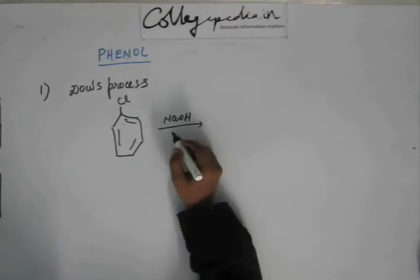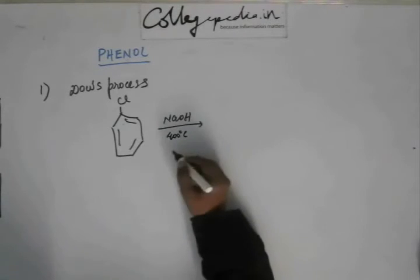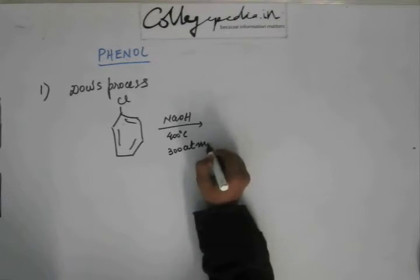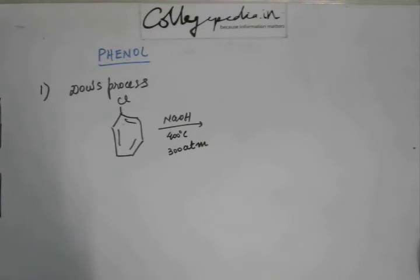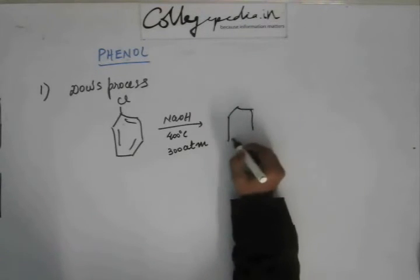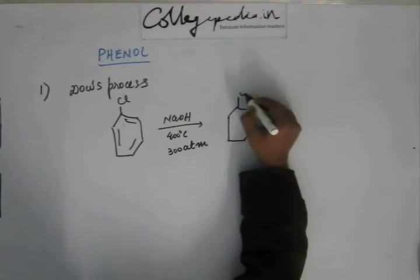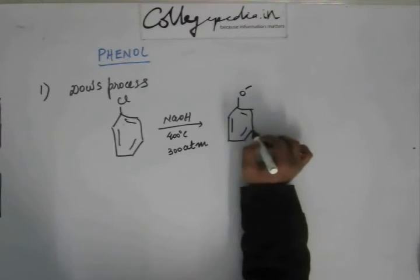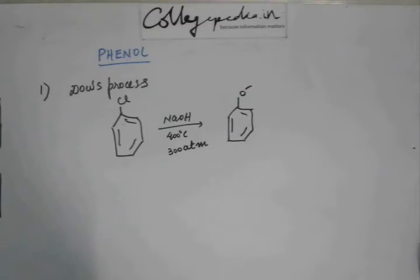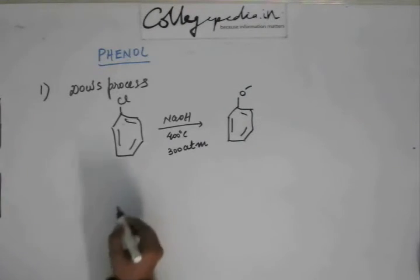SN1 is not possible because the cation that will be generated will be on SP2 hybridized carbon. So that too is not possible. So generally the substitution of this chlorobenzene is not possible. But if we make the condition of the reaction very rigorous - if we increase the temperature to around 400 degrees Celsius, if we increase the pressure to around 300 atmospheric pressure - then under these extreme conditions, the substitution does occur.